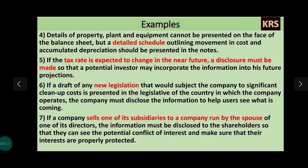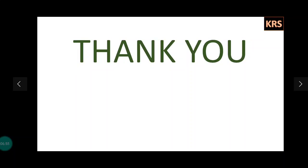Seventh point: if a company sells one of its subsidiaries to a company run by the spouse of one of its directors — suppose a director sold a subsidiary to their husband or wife — then that information should also be disclosed. Shareholders need to know so they can determine whether their interests are being affected, and to make sure that their interests are properly protected.